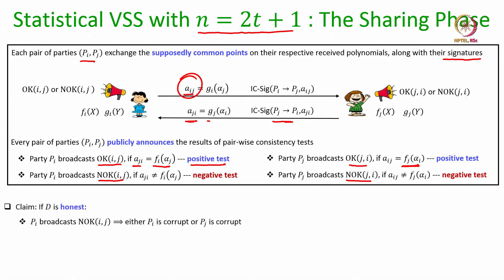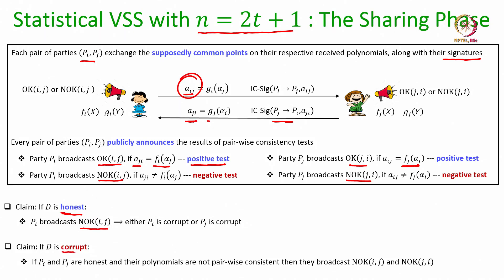Now let us make a few claims about what happens after the pairwise consistency test. If the dealer is honest and some party P_i has broadcast a Not-OK message against party P_j, then either P_i or P_j is corrupt — because if both are honest their polynomials would be pairwise consistent and only an OK would be broadcast. The second claim is that if the dealer is corrupt and a pair of honest parties P_i and P_j have polynomials that are not pairwise consistent, then both will broadcast Not-OK against each other.